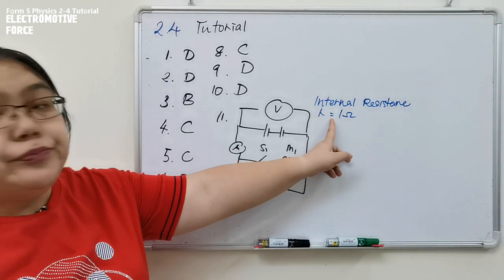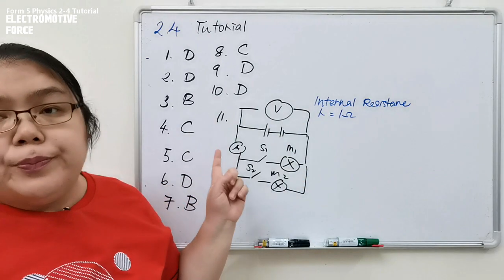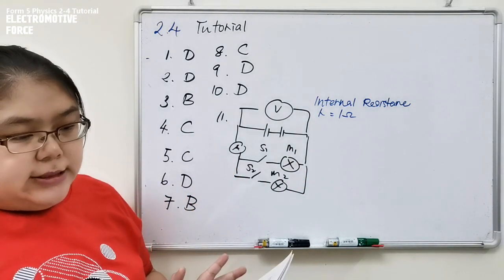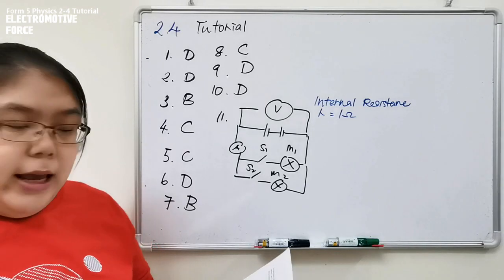The first one says the internal resistance is 1 ohm. From here the question never gives anything, they just say like this. Let's see question 8.